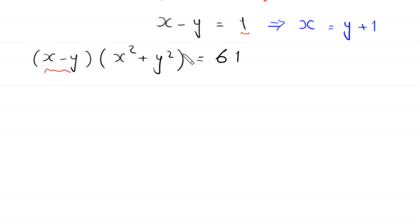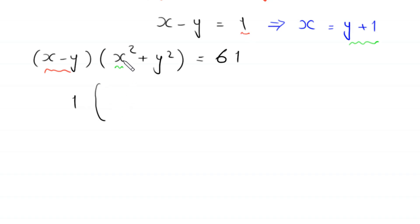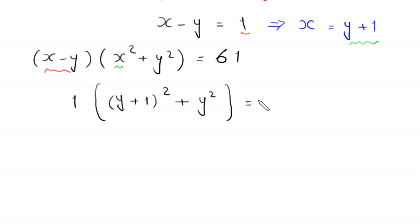In this equation we put the value of x minus y, which is 1, and in place of x we write y plus 1. Then this equation will become: 1 times (y plus 1) squared plus y squared is equal to 61. Multiplying by 1 does not make any change.